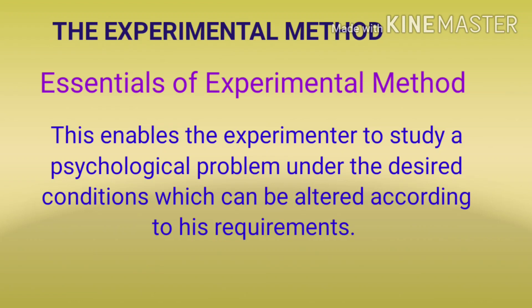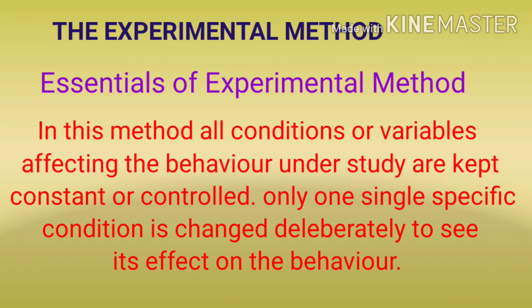The experimental method helps the investigator to study a psychological problem. In this method, all conditions and variables affecting the behavior under study are kept constant or controlled. Only one single specific condition is changed deliberately to see its effect on the behavior. That one deliberately changed condition and variable is kept independent.